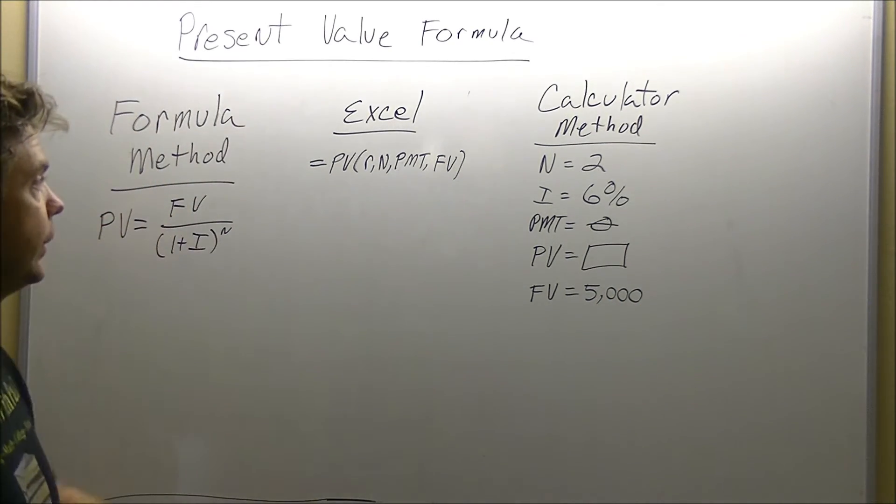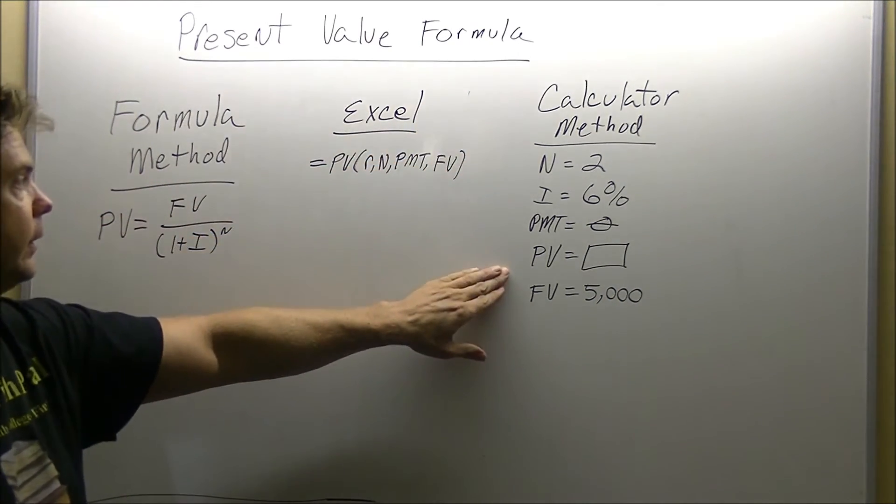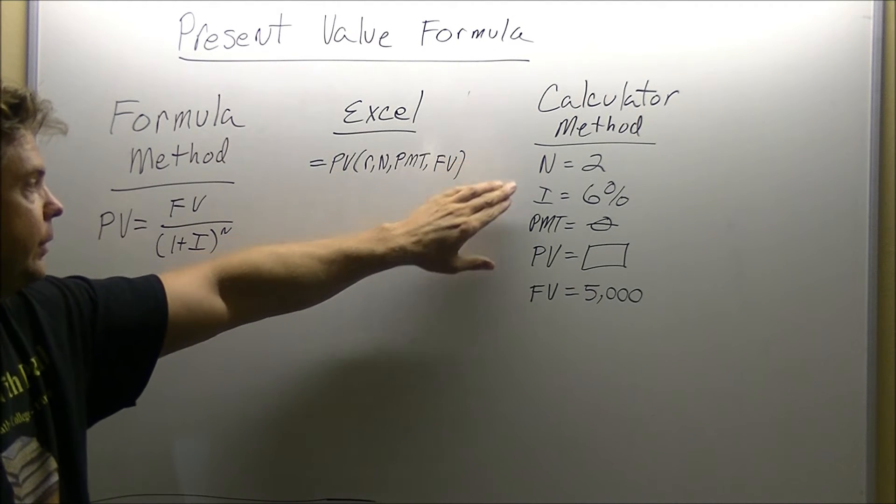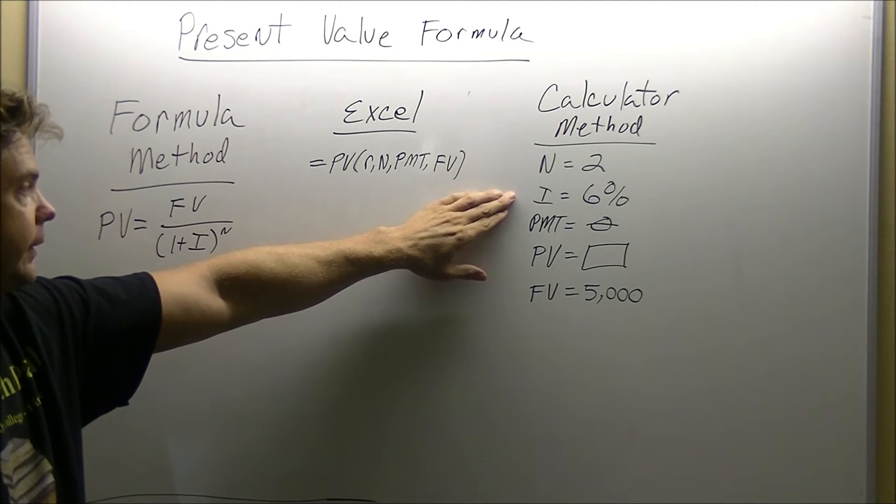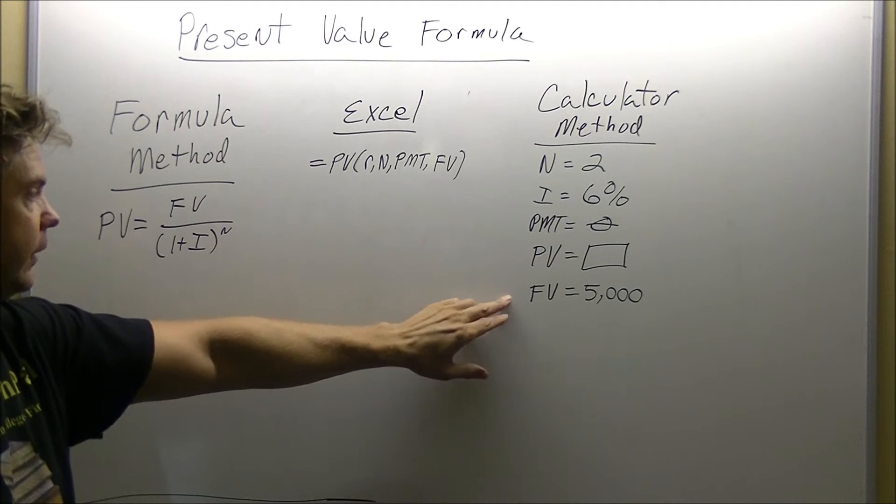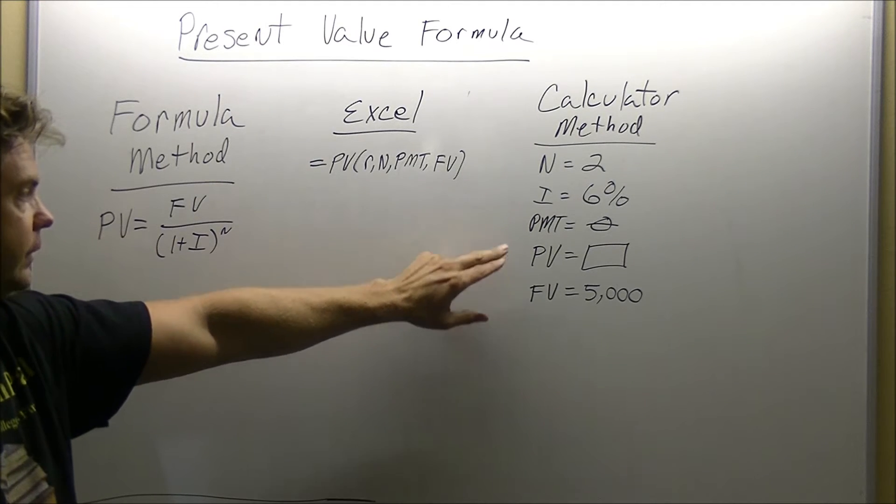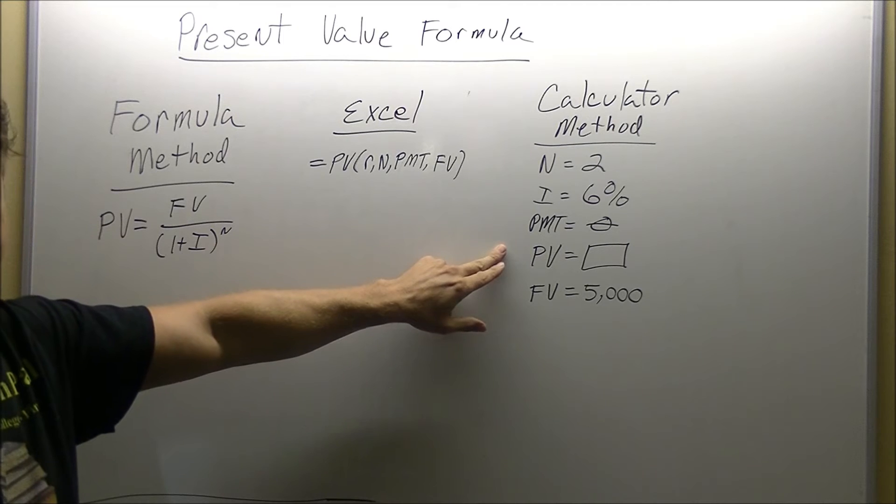Now if we're going to solve it with the calculator method, we would just put for N 2, I 6% or 6, payment zero, future value of $5,000, and it would give us a present value.